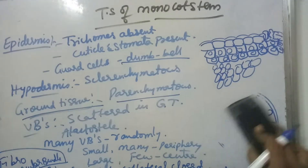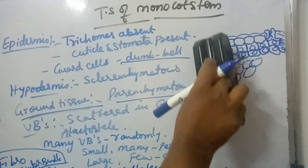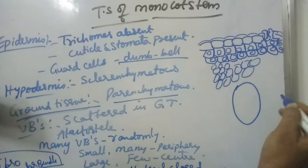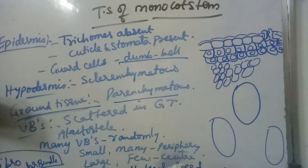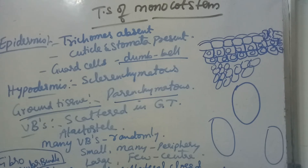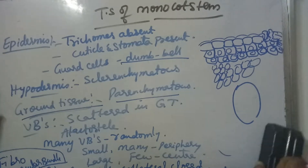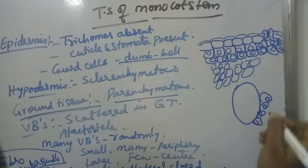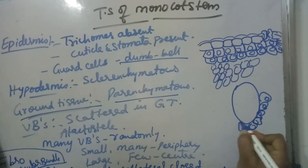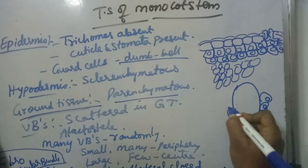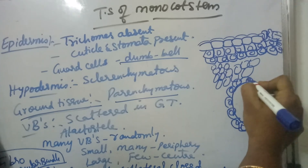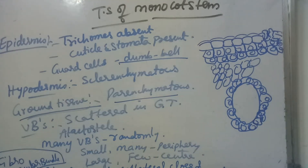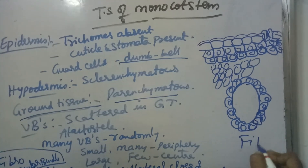In the sector enlarged diagram of monocot stem, you can see epidermis, cuticle, sclerenchymatous hypodermis, and ground tissue in which vascular bundles are scattered. Each vascular bundle is surrounded by a sclerenchymatous bundle sheath. Because of this, the vascular bundles in monocot stem are known as fibrovascular bundles.